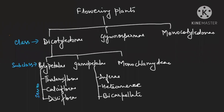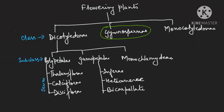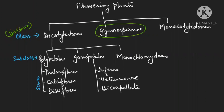Bentham and Hooker divided flowering plants into three classes: Dicotyledon, Gymnosperms, and Monocotyledon. One drawback is that gymnosperms are kept between the two members of angiosperms, because they were not following phylogeny. Dicotyledon is divided into three subclasses: Polypetalae, Gamopetalae, and Monochlamydae. Polypetalae is divided into three series: Thalamiflorae, Calyciflorae, and Disciflorae. Gamopetalae is also divided into three series: Heteromerae, Inferae, and Bicarpellatae.